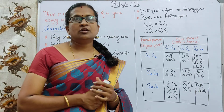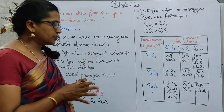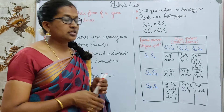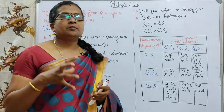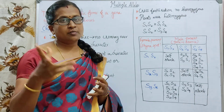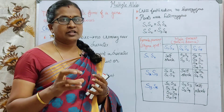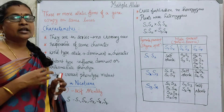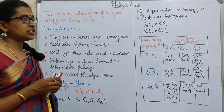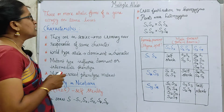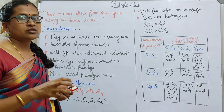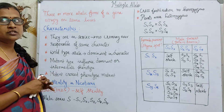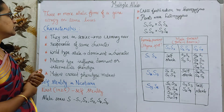Welcome back. Today we are going to discuss the topic of multiple alleles. Generally, a phenotypic trait — the characters of a particular individual — may depend on a single pair of genes, where each gene occupies a specific locus. In multiple alleles, more than two or three allelic forms of a particular gene occupy the same locus. When more allelic forms occupy the same locus of a particular gene, it is called multiple alleles.